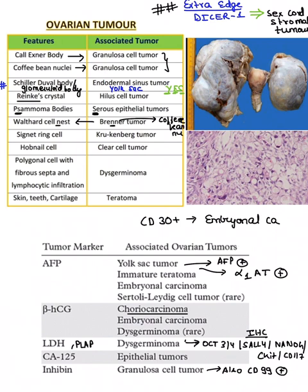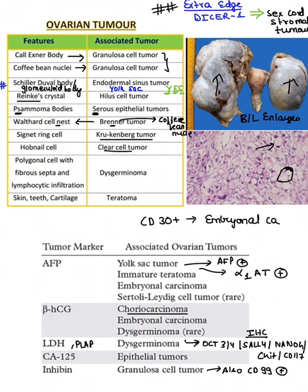Coming on to the signet ring cell, which is seen in Krukenberg tumor. In the gross photo, you can see bilaterally enlarged ovaries — metastases from somewhere else. On histopathology, it appears as a mucin-filled structure with the nucleus pushed towards the periphery.